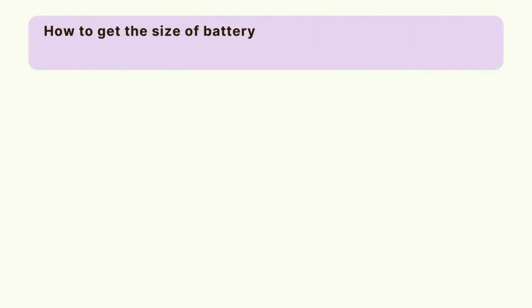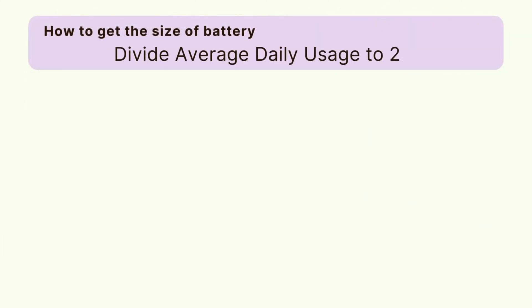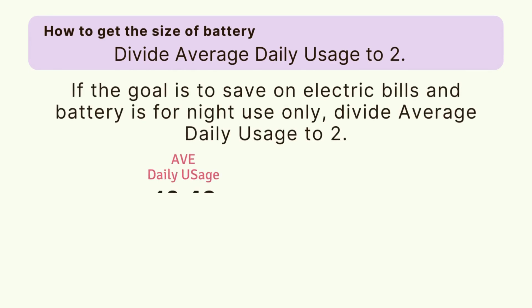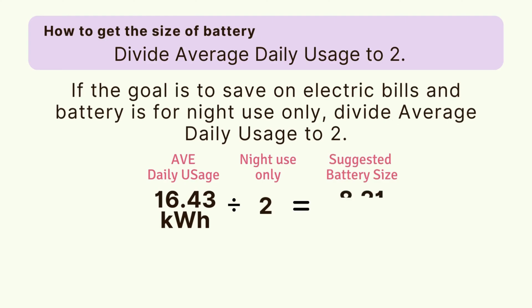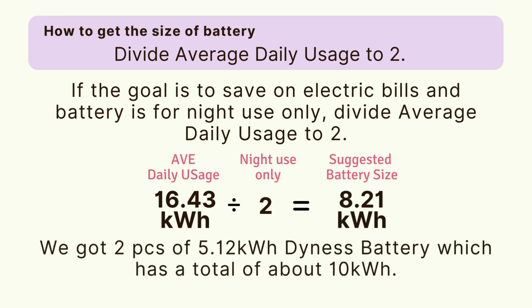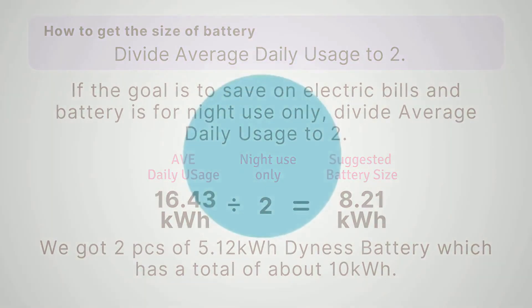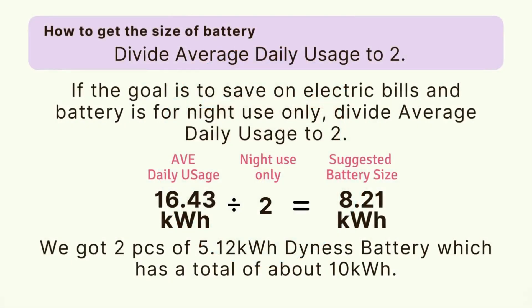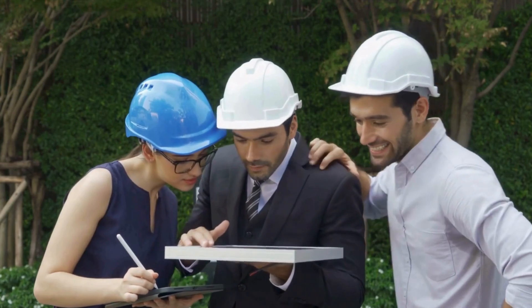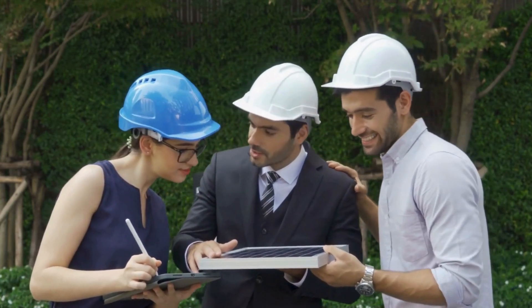For the battery, since our goal is to use it at night and power outages are rare in our area, we simply divide our average daily usage by 2, giving us 8.21 kilowatts. Since we were eyeing Dynel's battery, the closest size is 10 kilowatts, so we got 2 pieces of 5.12-kilowatt batteries. The reason we chose two instead of one 10-kilowatt unit is redundancy — if one breaks down, we still have the other.